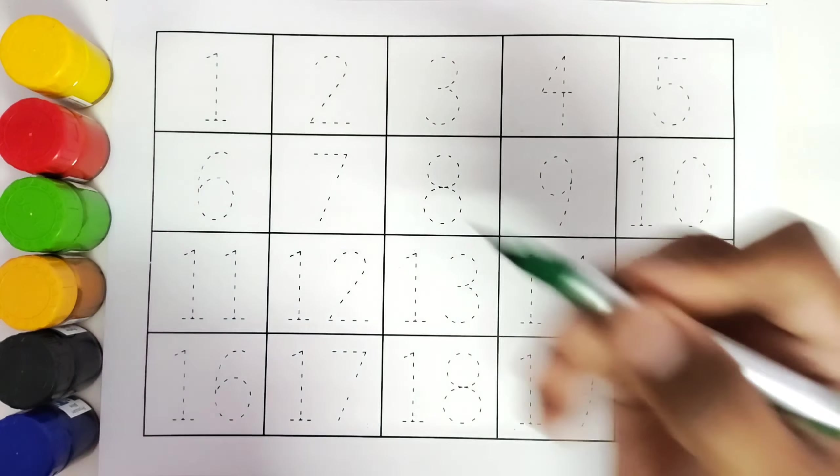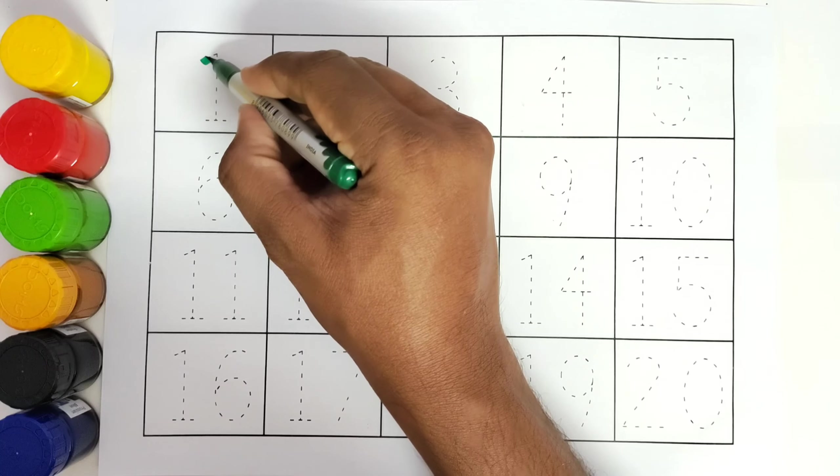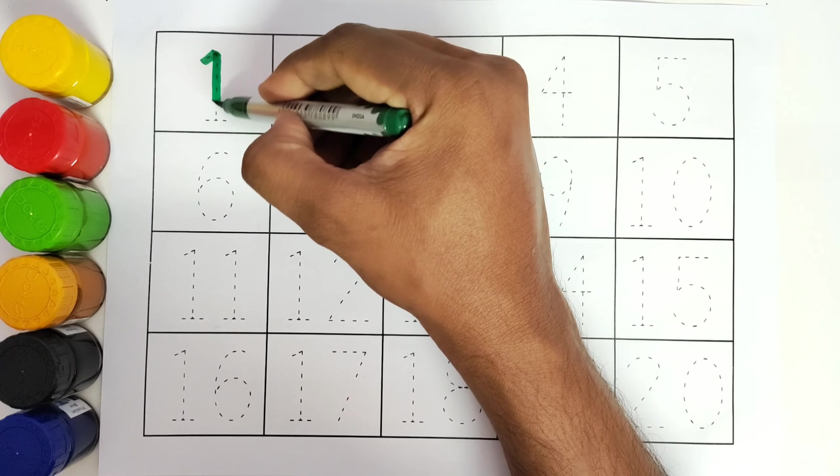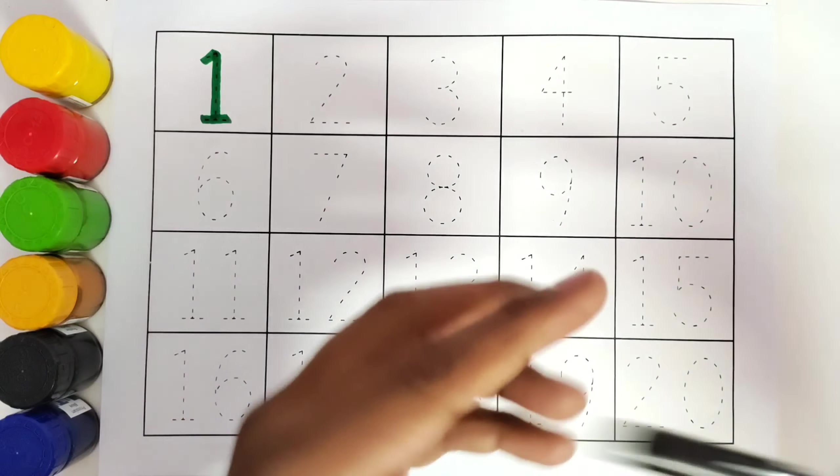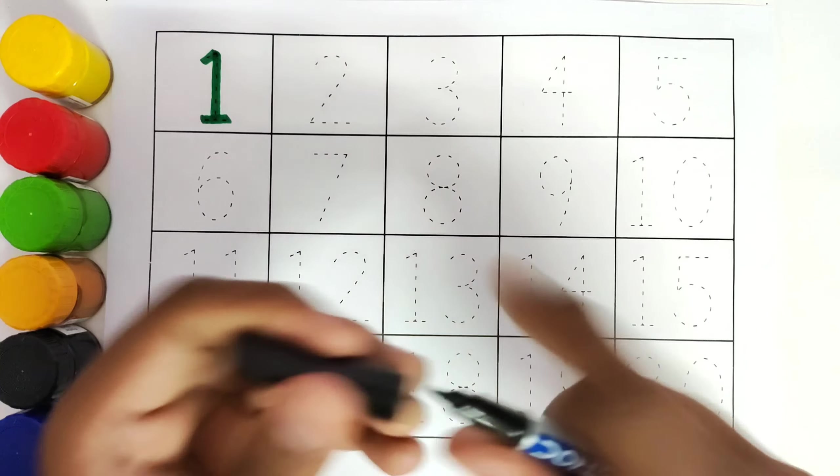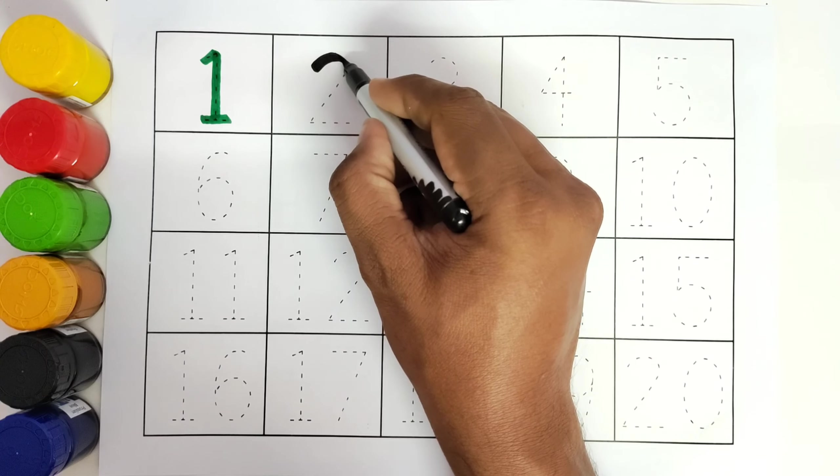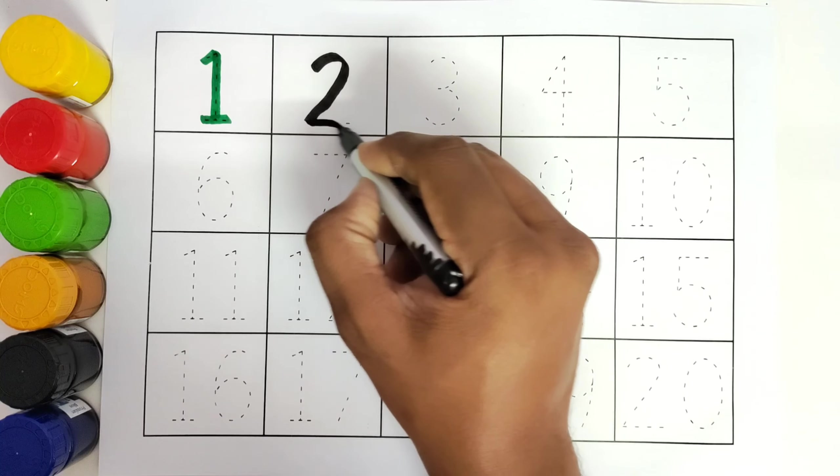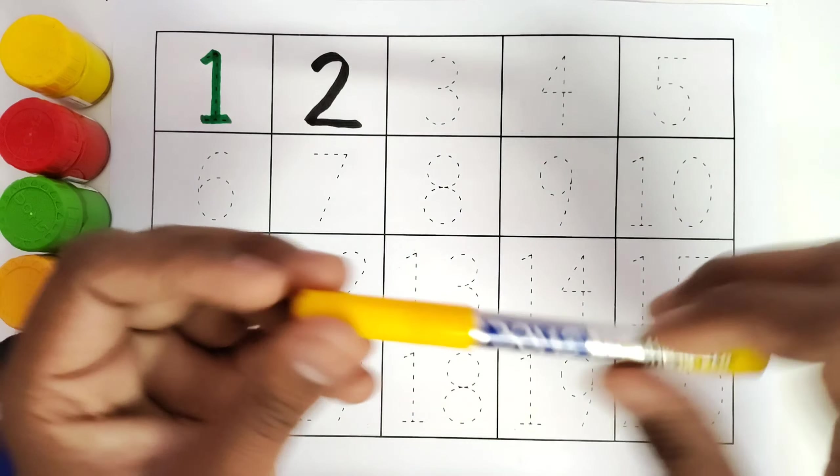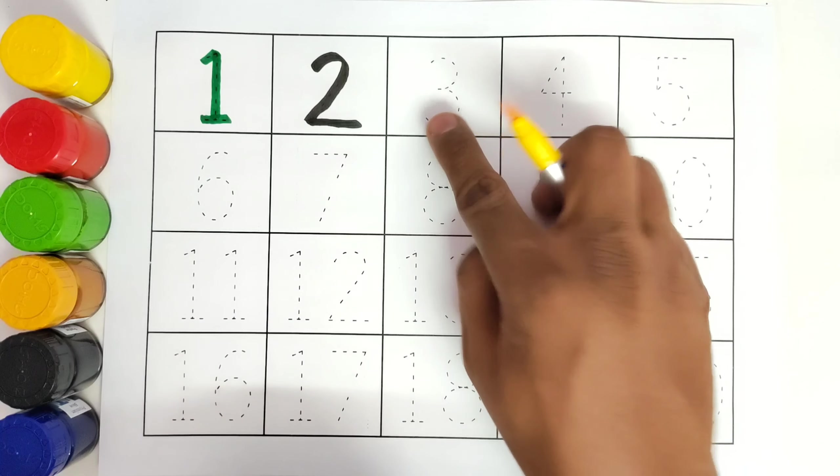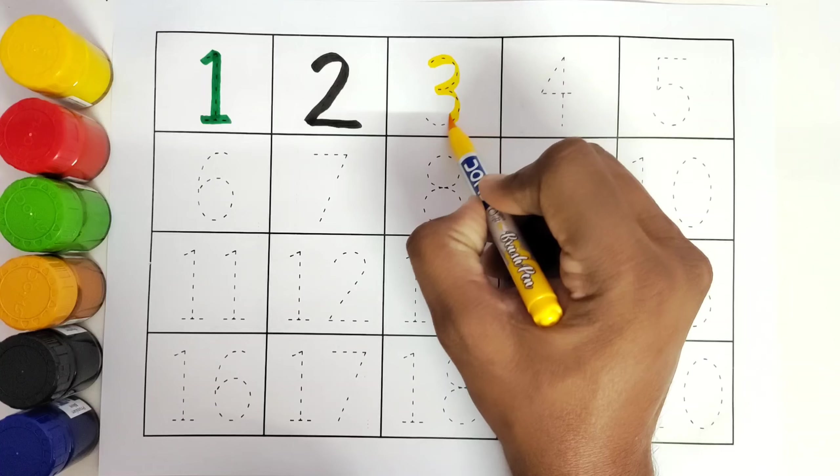Green colour, number 1. We will trace the number 1. This is black colour. We will trace the number 2. This is yellow colour, number 3. We will trace the number 3.